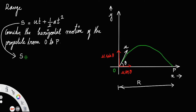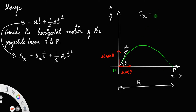We fit all horizontal values into this equation. S becomes Sx, the displacement along the x-direction. Since we are considering motion from O to P, Sx is the range R. U becomes Ux, which is the initial velocity in the horizontal direction — that is u cos theta. The acceleration term uses Ax, and time t is the same for both axes.